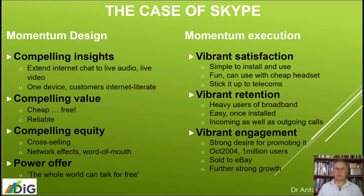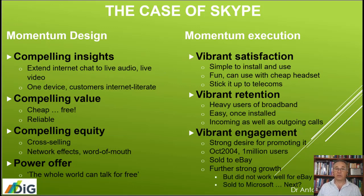Vibrant engagement — yes, there is a strong desire for promoting it. Remember, when there's a network effect, and communication is a very important case of this, there's an incentive even for the consumers to go out and promote it. By October 2004, they already had 1 million users. Then they were sold to eBay and had further strong growth. However, they did not work so well for eBay. They sold to Microsoft. It's important also to have the right connection, the right synergies between products and the portfolio in the business.